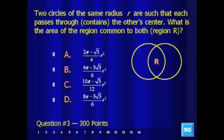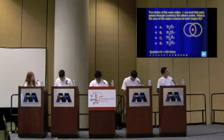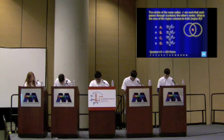Question 3 for 300 points. Two circles of the same radius r are such that each passes through or contains the other's center. What is the area of the region common to both — the region labeled R? Is it a) 2π minus square root of 3 over 4, times r squared; b) 4π minus 3 square root of 3 over 6, times r squared; c) 10π minus square root of 3 over 12, times r squared; or d) 8π minus 3 square root of 3 over 6, times r squared? Everyone see the diagram and understand the question? All right, 300 points — you have 90 seconds.